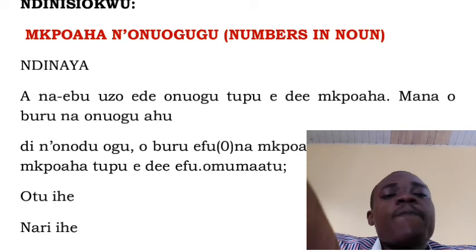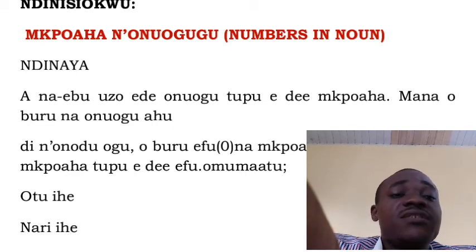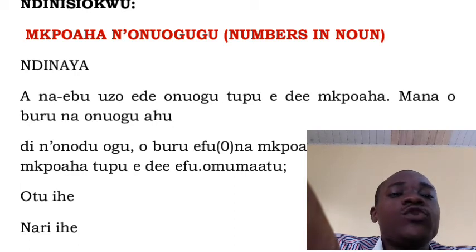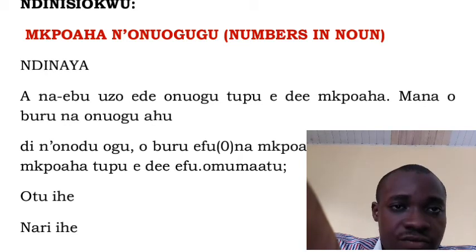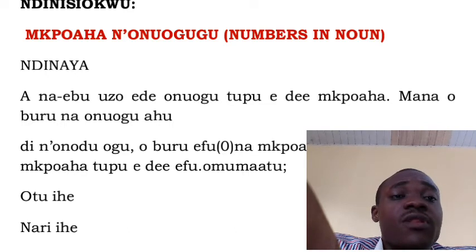The rule is: you first of all write the number before you write the noun. If it qualifies, write the number before you write the noun.